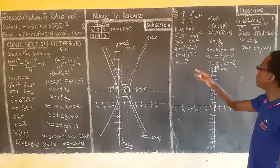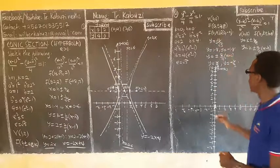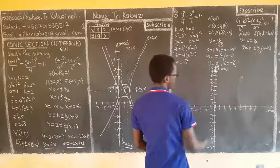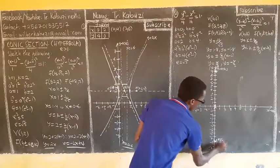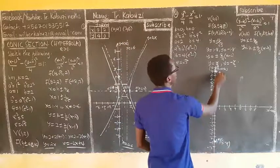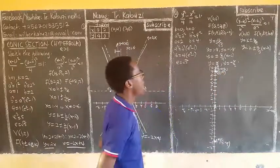Then I have my two foci at zero, nine and zero, negative nine. Zero, nine is this side, then the other at zero, negative nine somewhere here. Then the directrices.